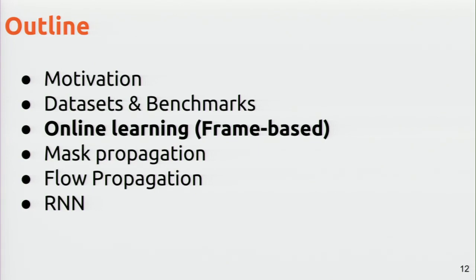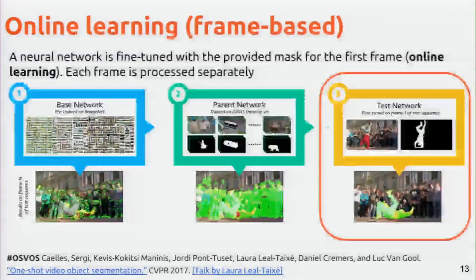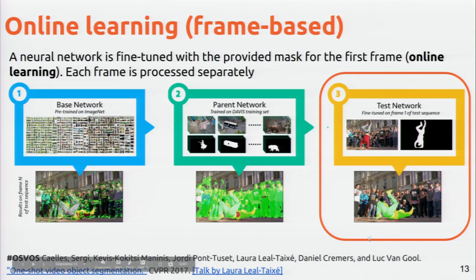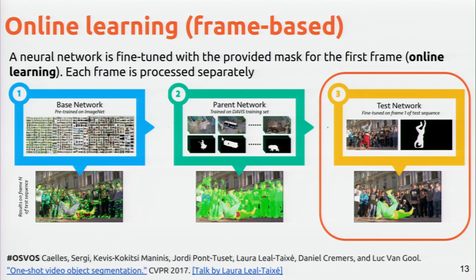Online learning has the particularity that it's applied frame by frame. Here is the whole pipeline of this work, called OSBOS. Basically, the idea is that you have a network pre-trained on ImageNet, and you train it on the training partition of the challenge. But what is really interesting is the last step, called online learning. Remember that in the one-shot task, you have the mask for the first frame — so they fine-tune the network on that first frame.